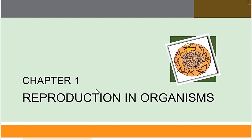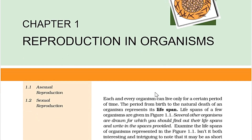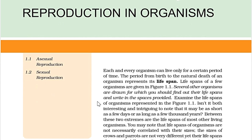Chapter 1: Reproduction in Organisms. This is the first page. There are many articles. I will tell you the important points. Which is a lifespan — if you ask about a person or one organism, there is a natural birth and a death, and a time period which is a lifespan period, which will tell you how long you live.